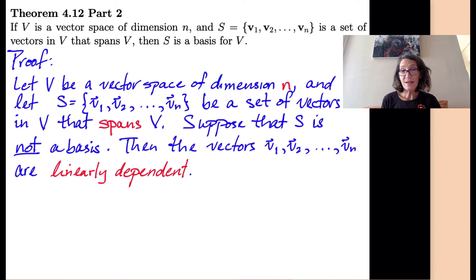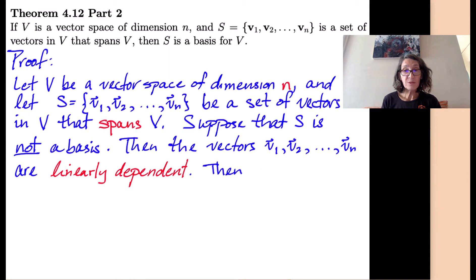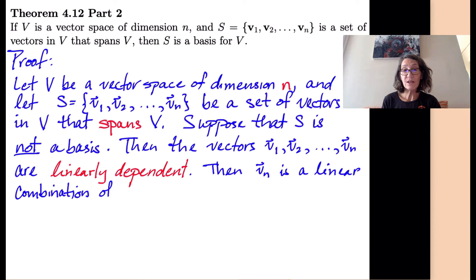What does that mean? That means that any one of those n vectors can be written as a linear combination of the other ones. So in particular, vn is a linear combination of v1, v2, ..., v_{n-1}.